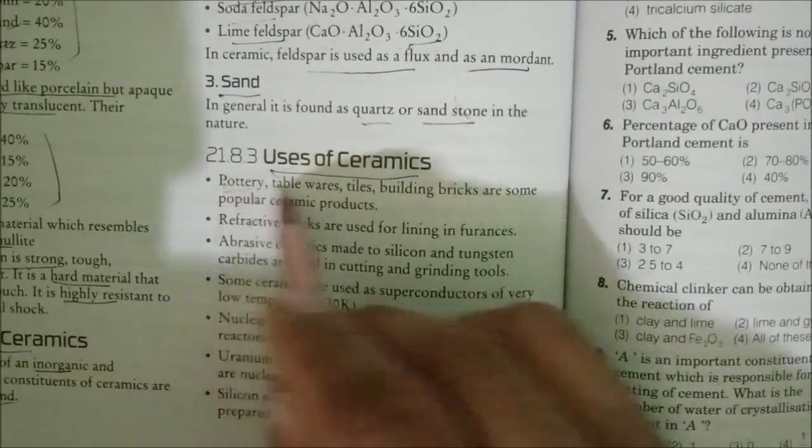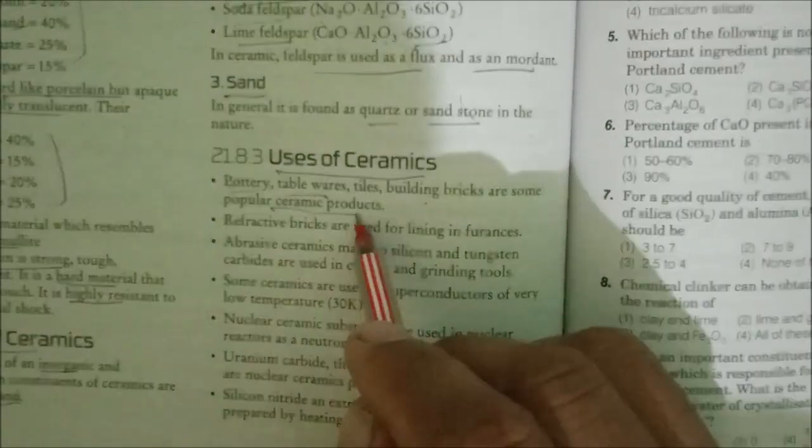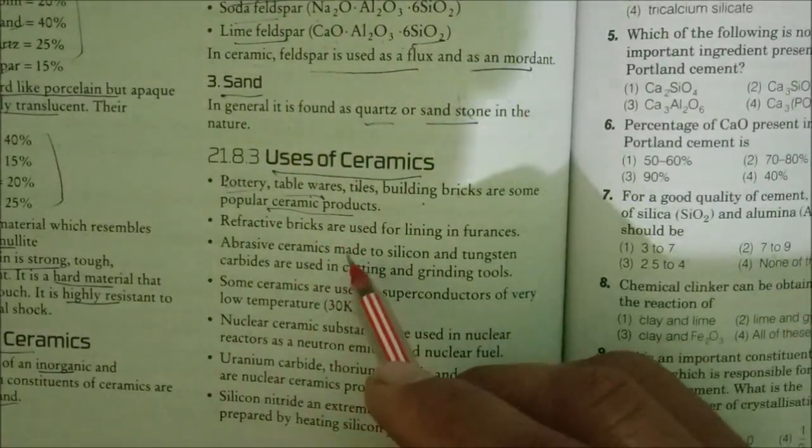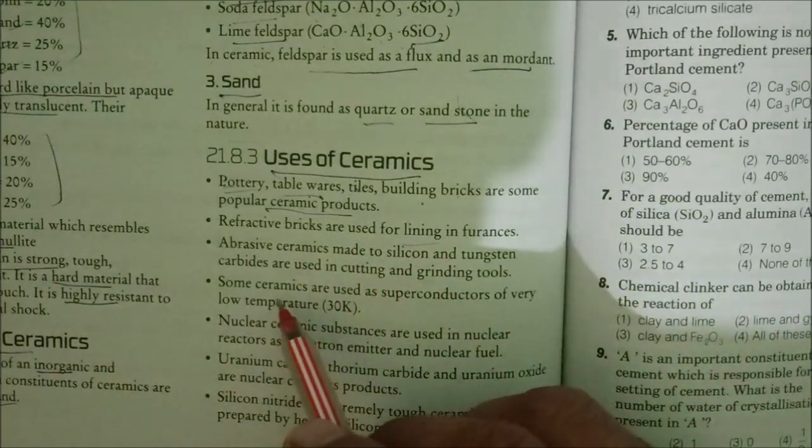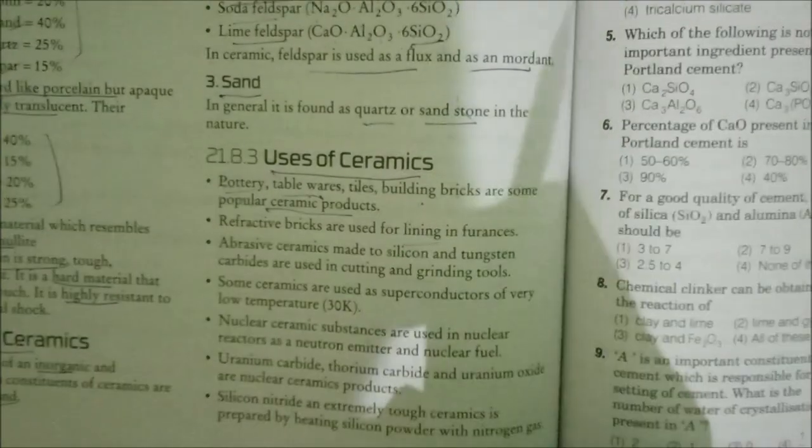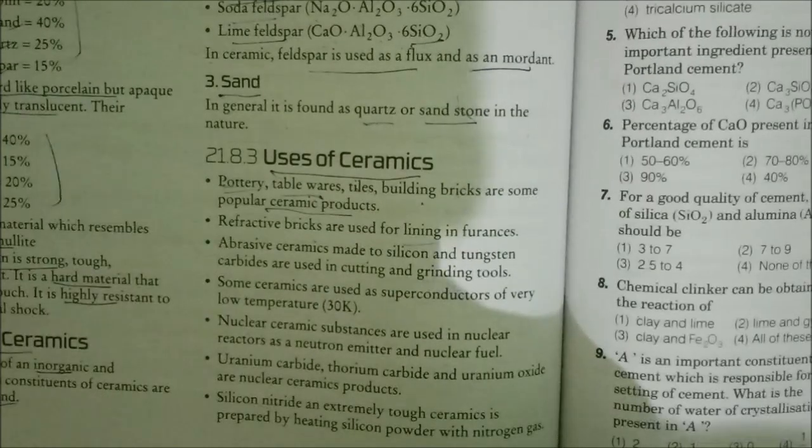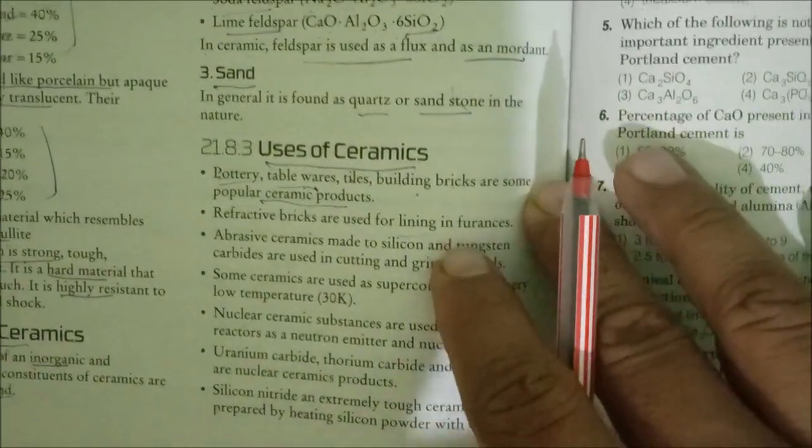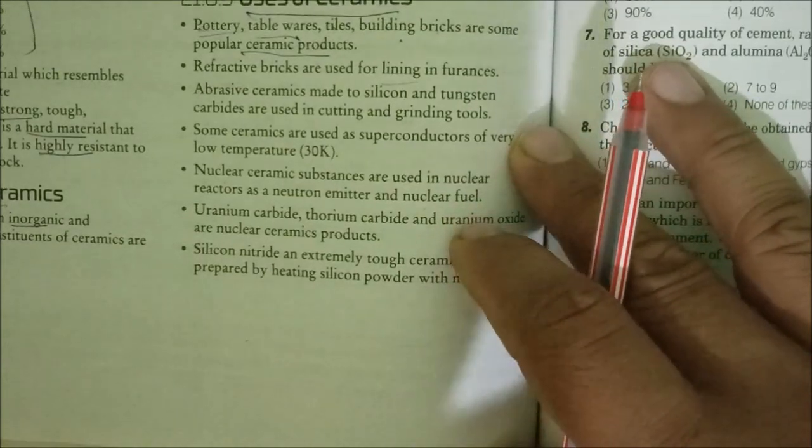Let us see about the uses of ceramics. Pottery, tableware, tiles, and building bricks are some popular ceramic products. Refractory bricks are used for lining in furnaces. Superconducting ceramics are used as superconductors at very low temperatures. Nuclear ceramic substances are used in nuclear reactors as neutron emitters and nuclear fuel. Silicon nitrides are extremely tough ceramics prepared by heating silicon powder with nitrogen gas.